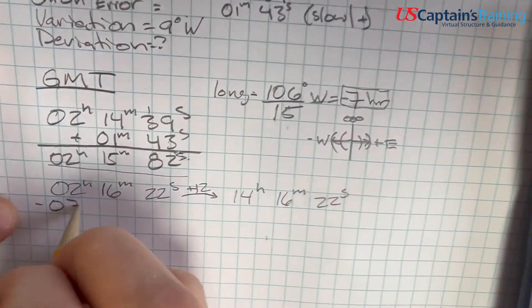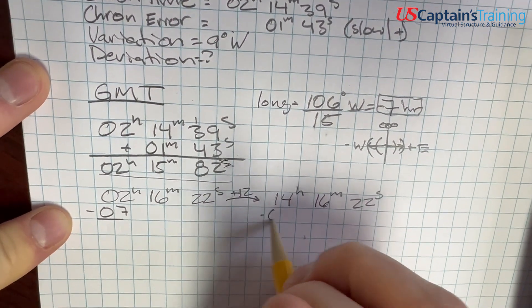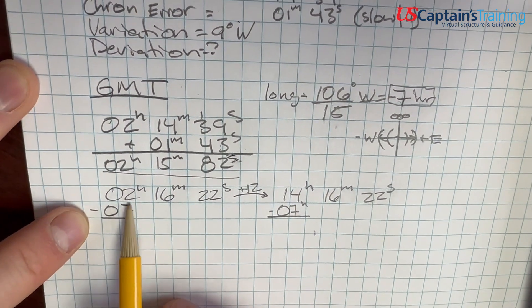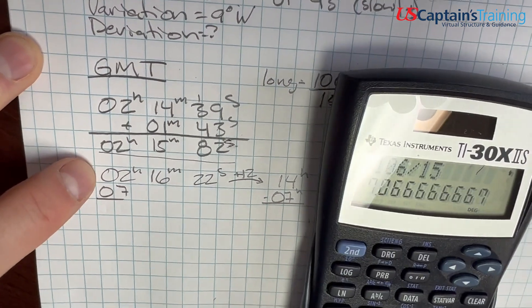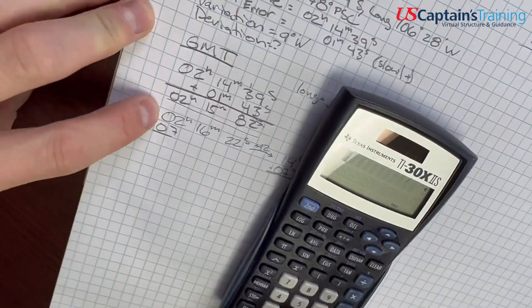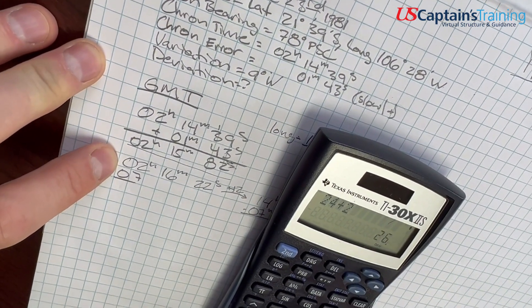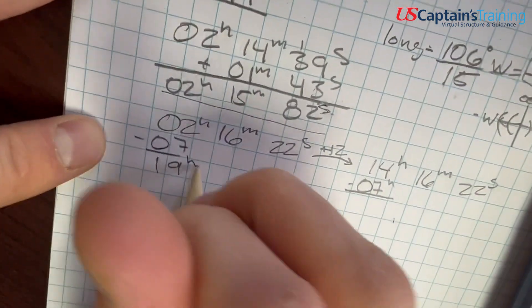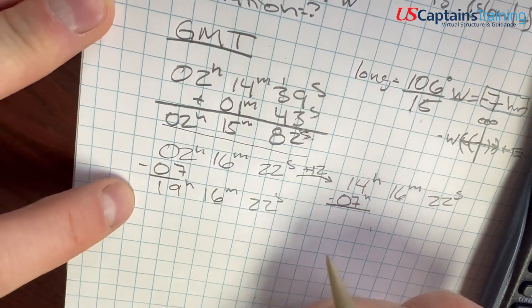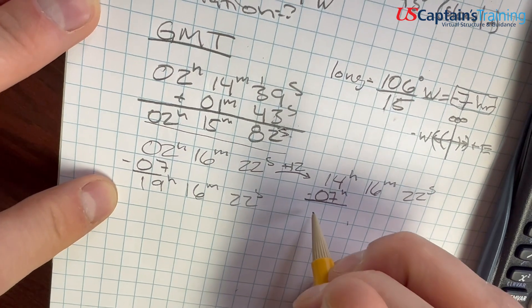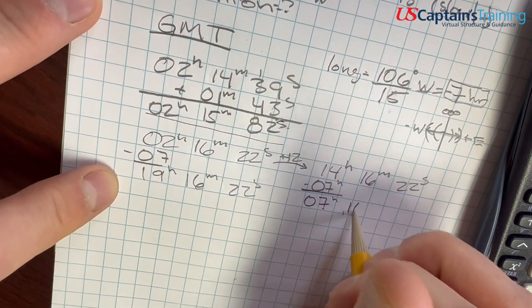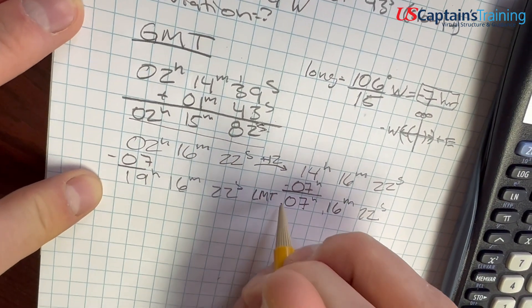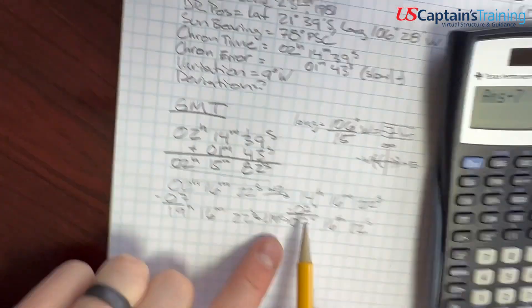If you subtract seven hours from both of these, where will we be? We can't take seven from two. A trick here, you just add 24 to two and then do it. So 24 plus 2 minus 7 equals 19. So here we have 19 hours, 16 minutes, 22 seconds, or 14 minus 7 equals 7 hours, 16 minutes, 22 seconds. These are LMTs, local mean times.